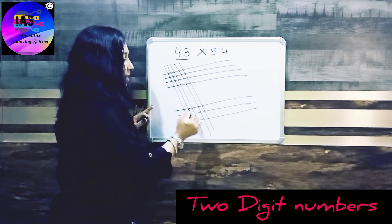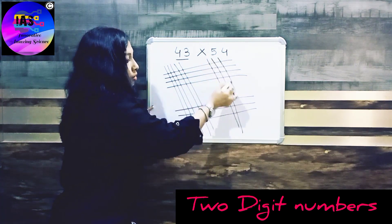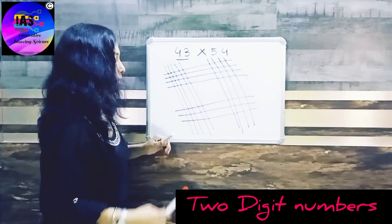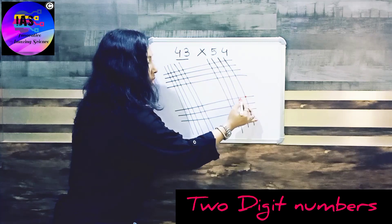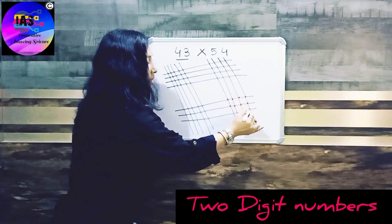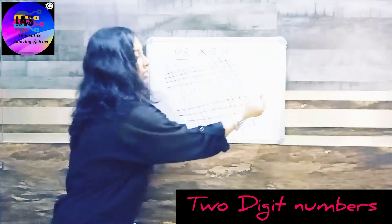We have to start counting. So our last number would be one, two, three, four, five, six, seven, eight, nine, ten, eleven, twelve. So we cannot write 12, we'll just write 2.